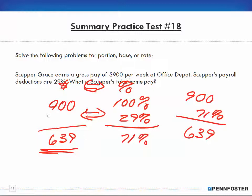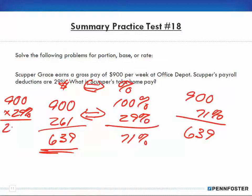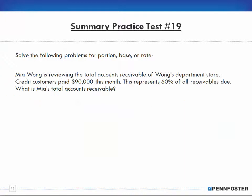To double-check: subtracting $639 from $900 gives $261. If I then calculate 29% of $900, I should get $261 — and I do, confirming all my figures are correct.